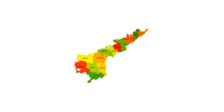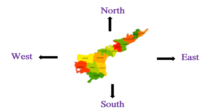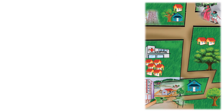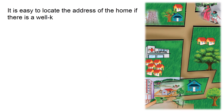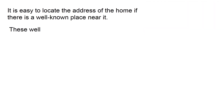Similarly, we can find our state's directions also — East, West, North. Here you see some pictures of symbols. What are they? It is easy to locate the address of a home if there is a well-known place near it. These well-known places are called landmarks.